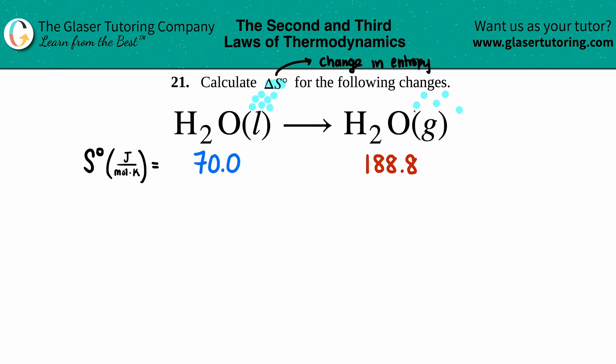So since I'm going from something that's more ordered to less ordered, aka more chaotic, I know that my delta S value has to be a positive value. You could always kind of double check by just looking at those states.